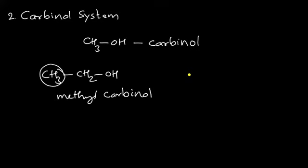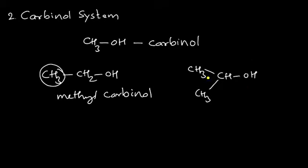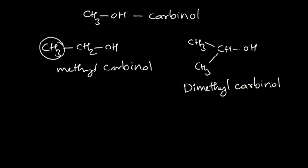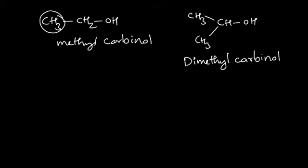If we replace two hydrogens from carbinol by CH₃ groups, we get (CH₃)₂CHOH. The CH-OH part is the carbinol, but both hydrogens are replaced by methyl groups. Therefore it becomes dimethyl carbinol.